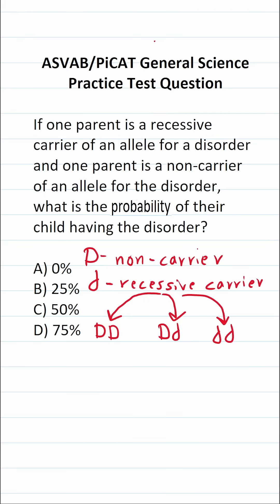This general science practice test question for the ASVAB says: if one parent is a recessive carrier of an allele for a disorder and one parent is a non-carrier of an allele for the disorder, what is the probability of their child having the disorder?